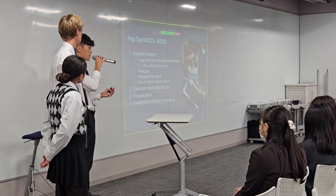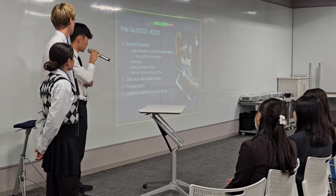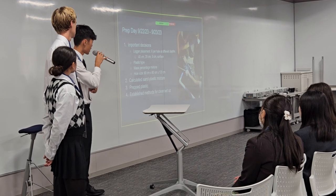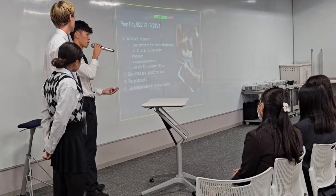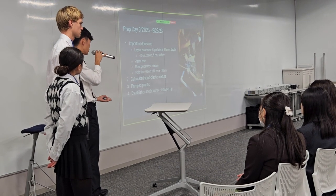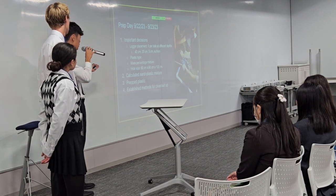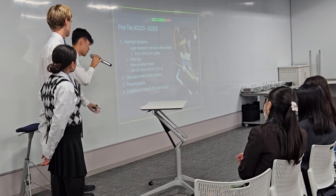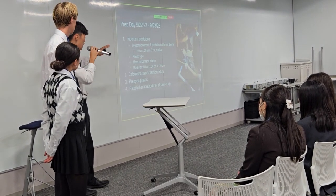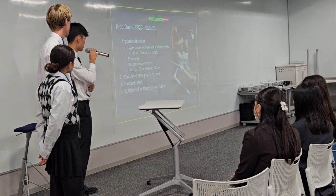We decided to use LDPE plastic, also known as low-density polyethylene plastic, because it's one of the most commonly manufactured plastics. We also decided to use a mass percentage mixture instead of a volume percentage mixture, because it's very difficult to get an accurate reading on the volume of marine debris, but very easy to get a mass reading. Lastly, we determined the hole size: 60 cm by 60 cm and 50 cm deep. We calculated how much plastic we would need for that volume of sand and portioned everything out.